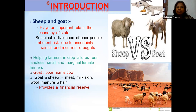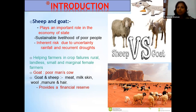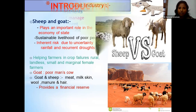Small ruminants are helping farmers during crop failures, particularly rural, landless, and marginal farmers. They are providing a financial reserve to all categories of people via meat, milk, fiber, manure, and hair — meaning each and every portion of the body of these small ruminants is of prime importance and economic value.